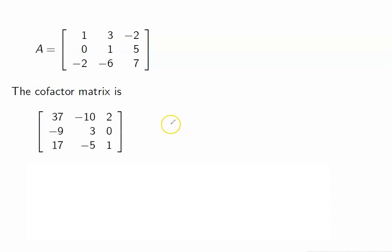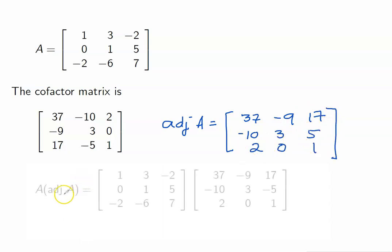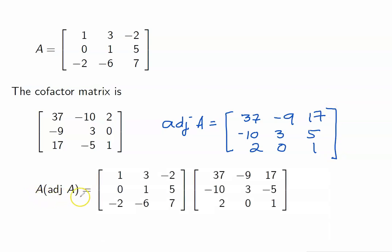Therefore, the adjoint of A is equal to the transpose of this cofactor matrix. Next, let us compute A times the adjoint of A.